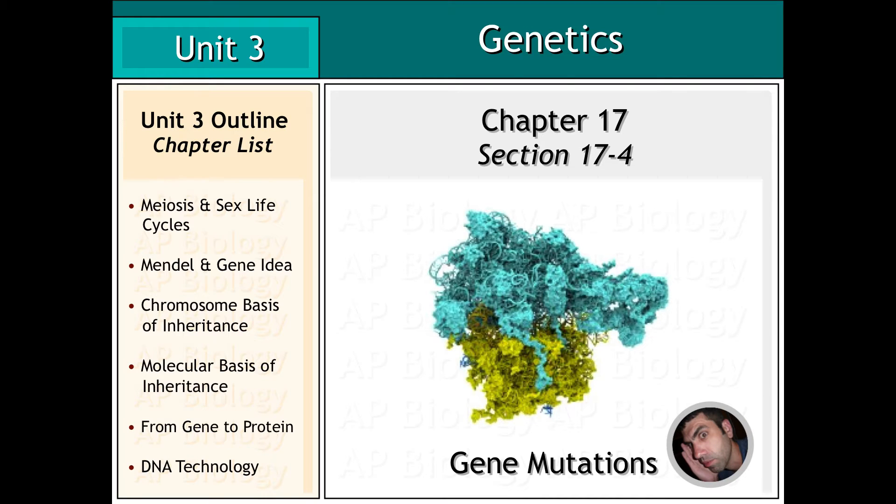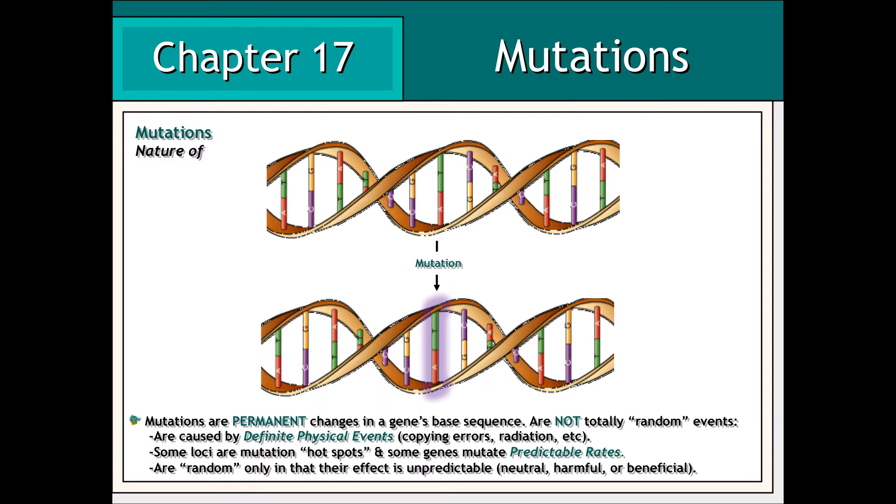In this section of Chapter 17, we're going to investigate the nature of genetic mutations. A mutation is a permanent change in a cell's DNA affecting the base sequence of a gene.